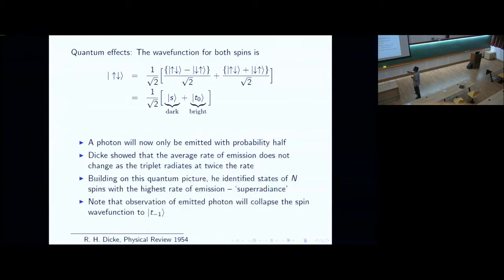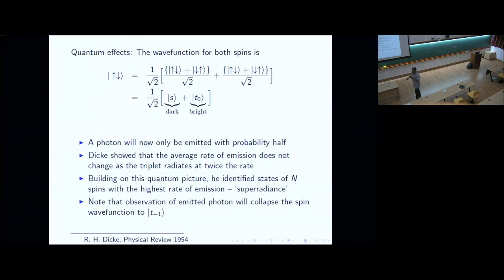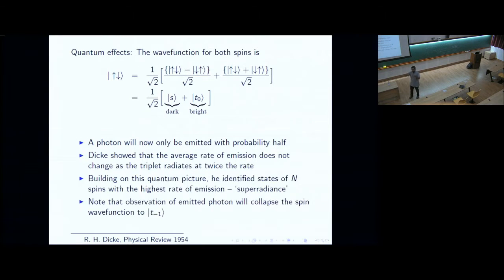Dicke went on to build this quantum picture extensively. He identified a class of states called superradiant states, which have the highest rate of photon emission. Note that if you bring one spin up and another spin down close together and observe a photon emitted, that is wave function collapse — you know the wave function has collapsed onto the triplet part. After observing the photon, the wave function of the spin system is triplet minus one: it's down-down. You start with up-down; if you see a photon, it becomes down-down.